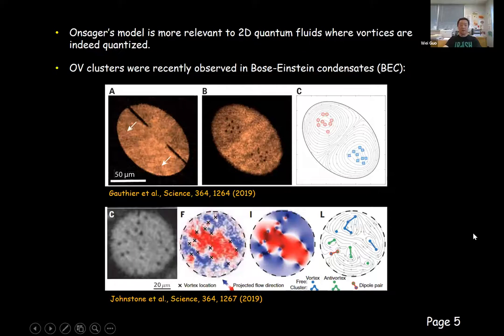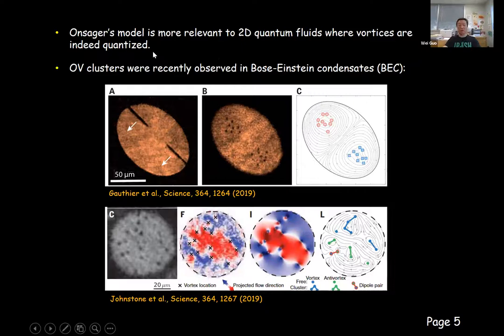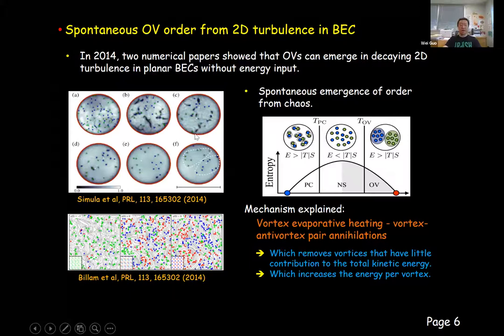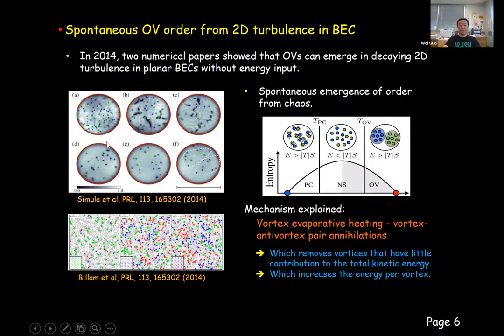Onsager's model was proposed for 2D turbulence in general, but it's more relevant to two-dimensional quantum fluids, such as superfluid helium film and two-dimensional Bose-Einstein condensate, because in those quantum fluids, vortices are indeed quantized topological point defects. Experimentally, negative-temperature Onsager vortices were observed in Bose-Einstein condensate; those vortices are produced by mechanically forcing the condensate, essentially injecting a lot of energy at large scales. What I'm more interested in is the numerical work reported in two papers in 2014, which showed that in planar BEC, even without any energy injection, Onsager vortices can still spontaneously emerge in the free decay of two-dimensional turbulence. This observation is counter-intuitive and excited a lot of subsequent research.